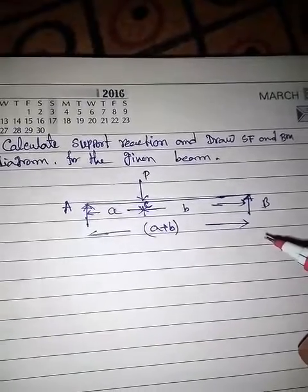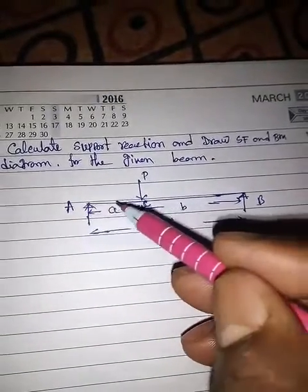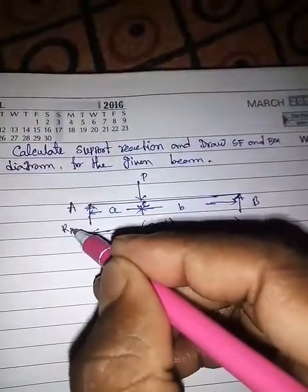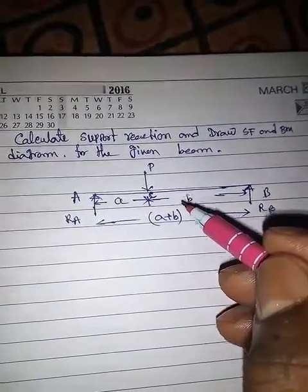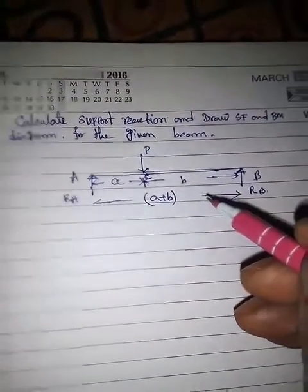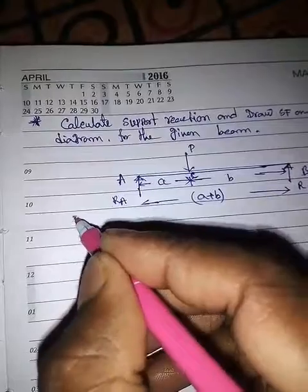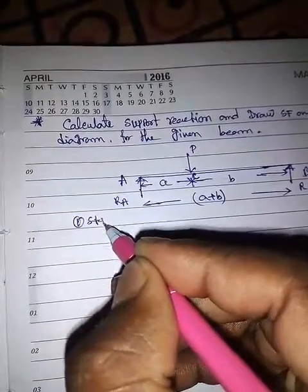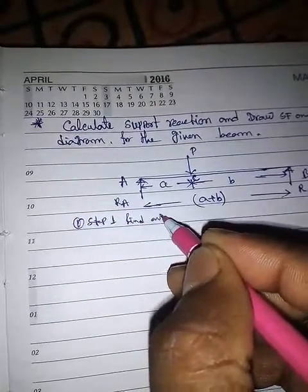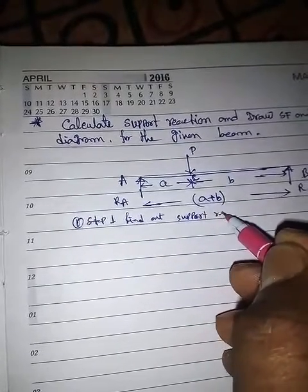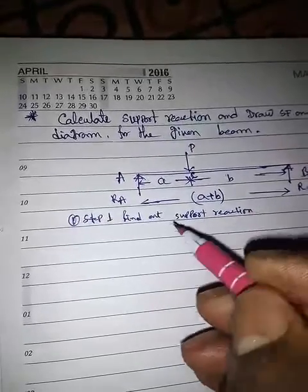In this problem we have to find out the value of support reaction RA and support reaction RB, and also draw the shear force and bending moment diagram. First of all, step one: find out the support reaction.